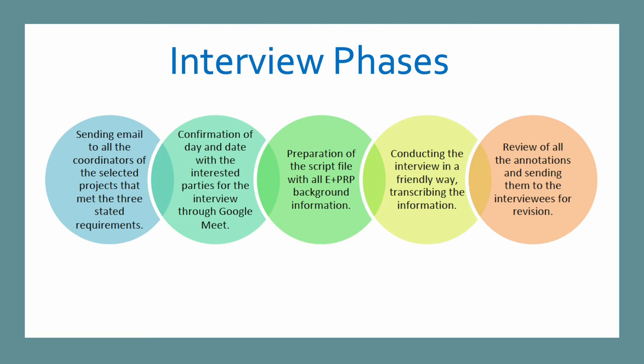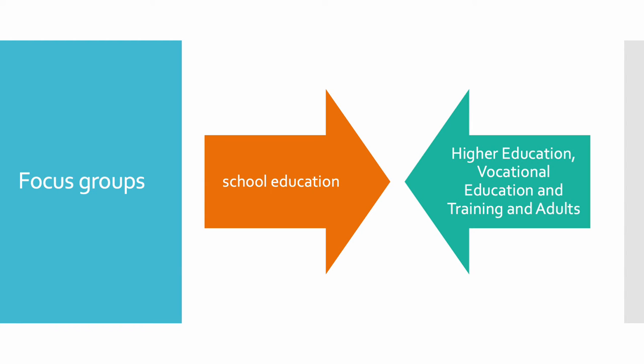All the information gathered has been retrieved accordingly. The fourth step for the analysis involved developing two focus groups: one for school education and another for the rest of the educational fields. Those focus groups have been carried out with a total of 13 coordinators — six for school education and seven for the remaining fields.